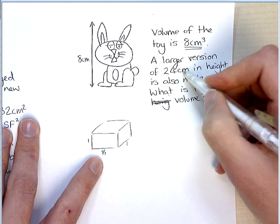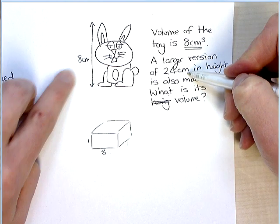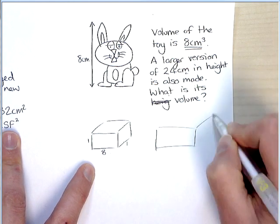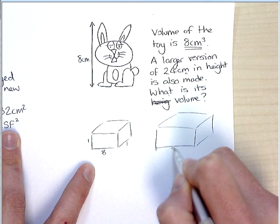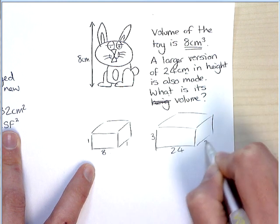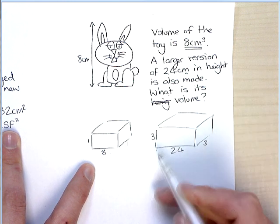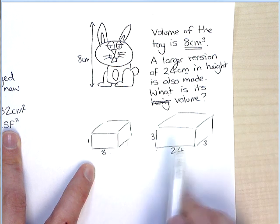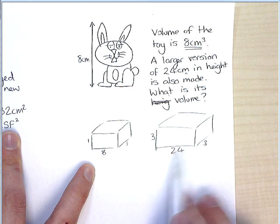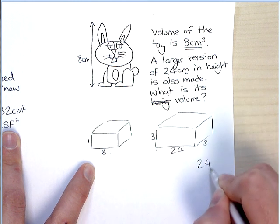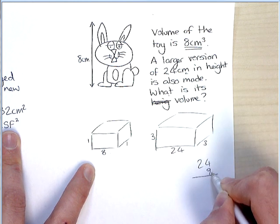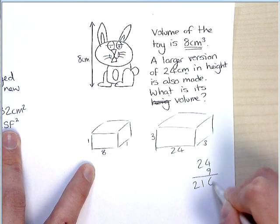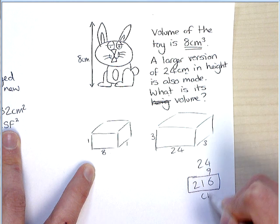So now I'm making it 3 times as bigger. You can see that. It's 8 and 24. So again, the scale factor is 3. So if I make it 24, 3, and 3, I can multiply these together. Every dimension is multiplied by 3. So what I'm going to do is 3 times 3 is 9, and then times that by 24. So that's 180 plus 36 is 216 centimetres cubed.